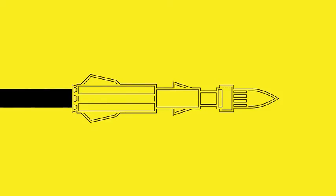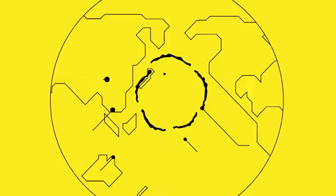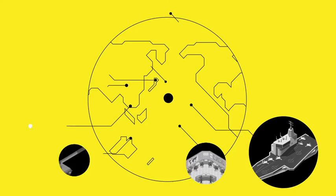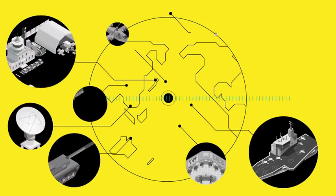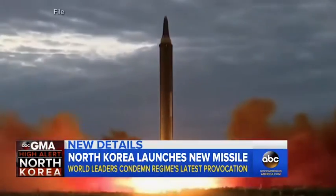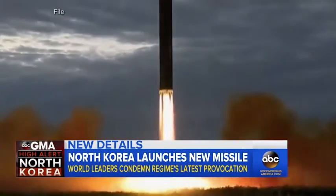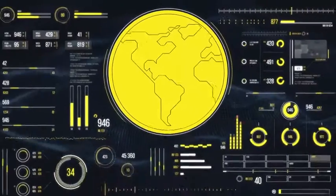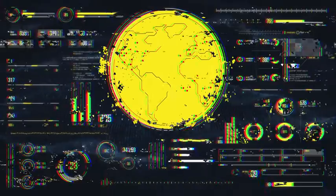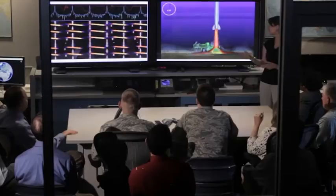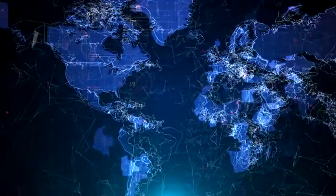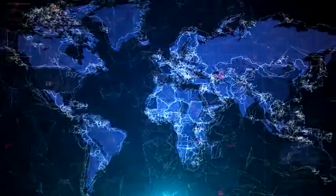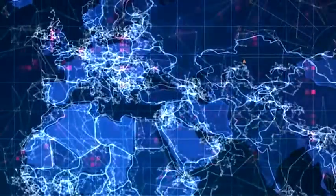So on the trajectory of a single missile flight, we have changed supported and supporting relationships while the missile's in flight. Our C2 has to be agile enough for that. And so we're thinking about global campaign plans and global fires to make sure that we're ready for that global kind of a fight.